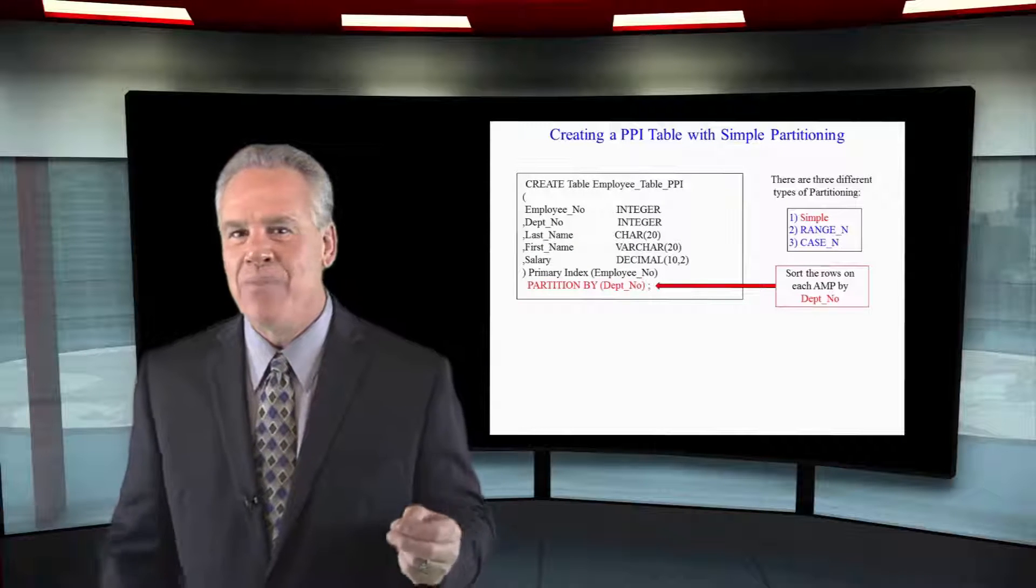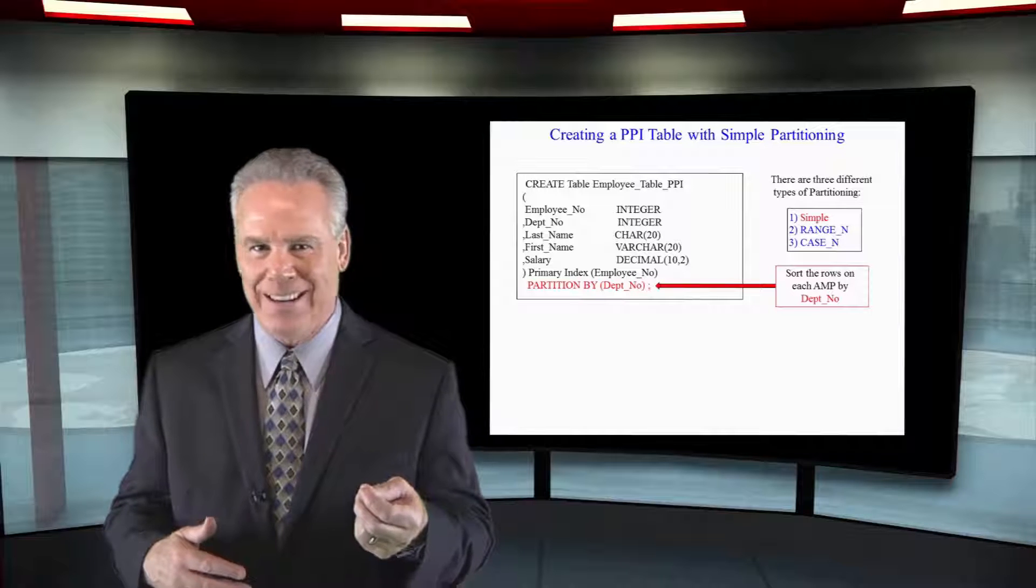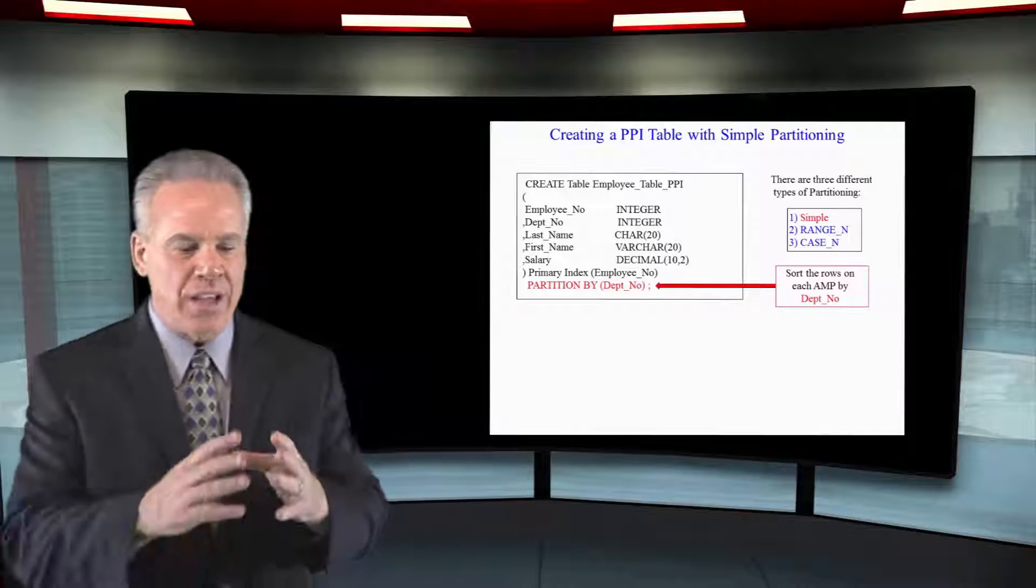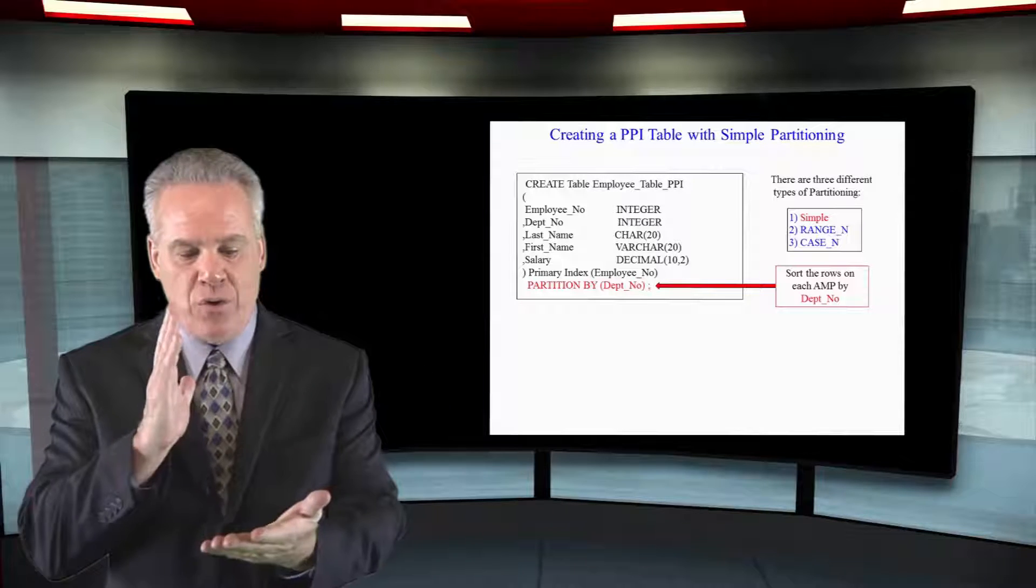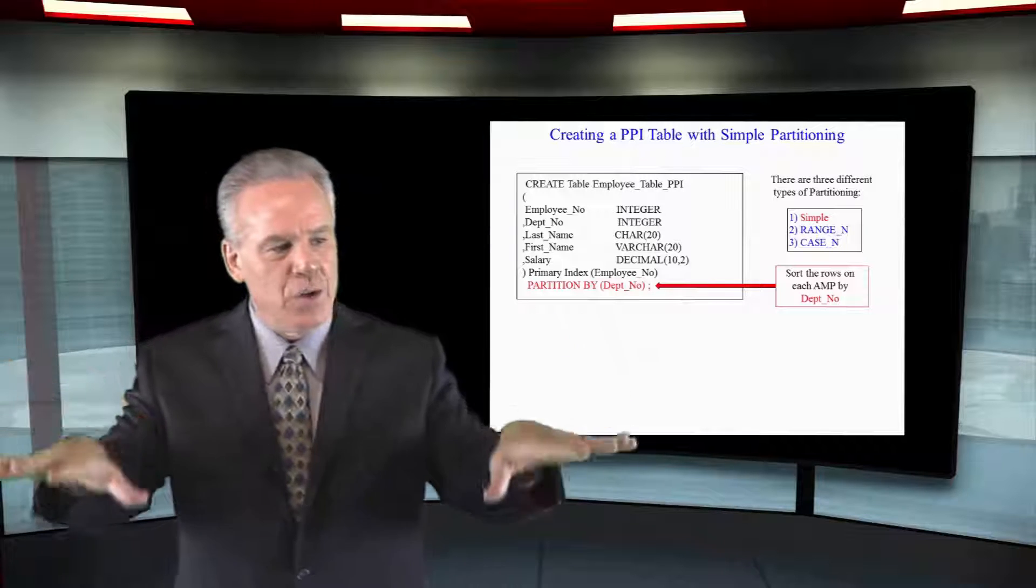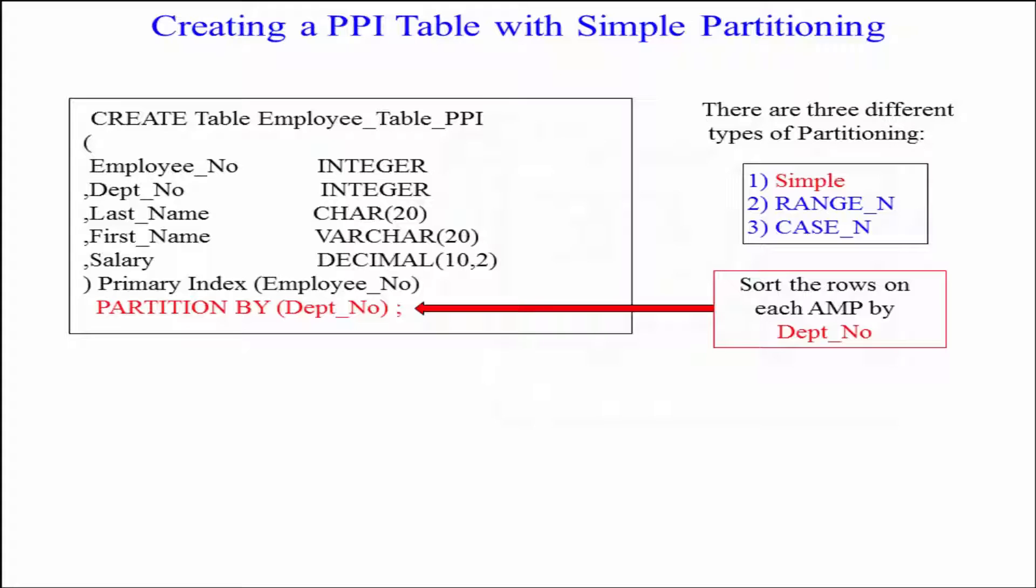Here we're creating a table that is a PPI table, partitioned primary index. What that really means is that we're going to still have a primary index that will be used to hash the data to the proper AMP. But once it gets on the AMP, it usually sorts by the row ID. We're not going to have the AMP sort by the row ID. We're going to have each AMP sort by the partition that we give it.